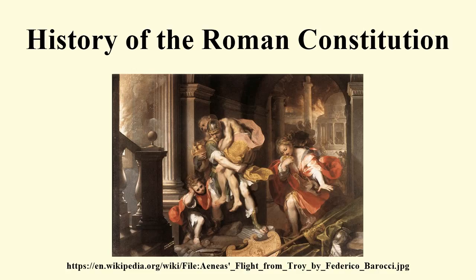When Diocletian became Roman Emperor in 284, the Principate was abolished, and a new system, the Dominate, was established. This system survived until the ultimate fall of the Eastern Roman Empire in 1453, under the Kingdom. The period of the Kingdom can be divided into two epochs based on the legends, handed down to us principally in the first book of Livy's Ab Urbe Condita.